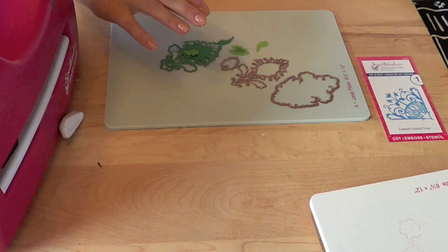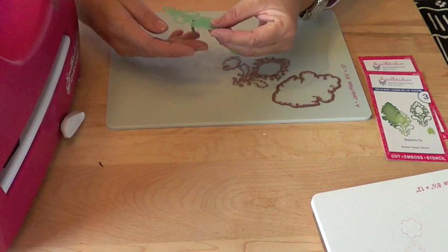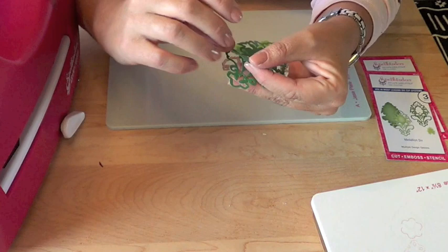Finally, the Medallion 6 is another set that we have. Once again, this die template comes with three die templates in the set with multiple cutting, embossing, and stenciling options. We can nest the solid background with the cut background to form this beautiful shape. But the fun feature on this die template is the shapes that we cut out. Don't discard them.